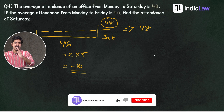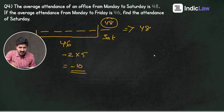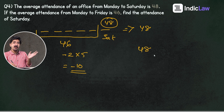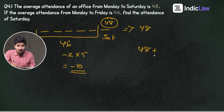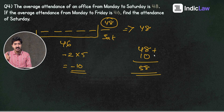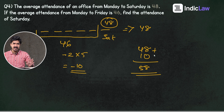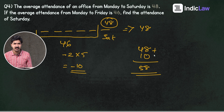He maintained the average at 46 and rested 10 at the front. To maintain the total average of 48 for all 6 days, Saturday must compensate. Saturday's attendance needs to cover the total. So, Saturday attendance equals 48 plus 10, which is 58. We are going to end the session with a complete average problem solved.